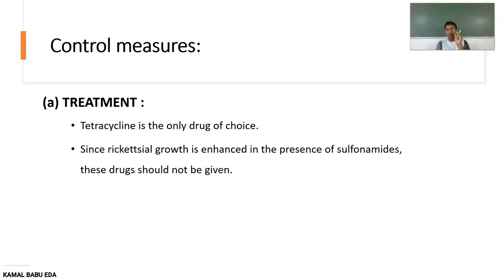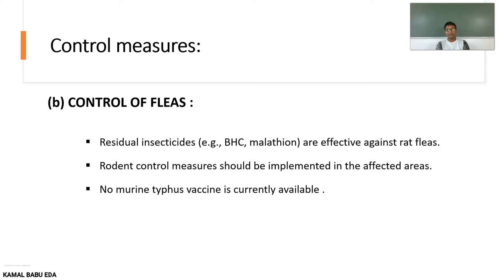For control measures, the drug of choice is tetracycline. Rickettsial growth is enhanced by sulfonamides and penicillin, so in rickettsial diseases, sulfonamides and penicillin must be avoided as they enhance the growth of the rickettsial organisms. The next measure is control of fleas using residual insecticides — for example, malathion — which are effective against fleas.